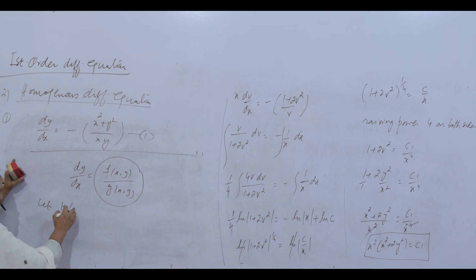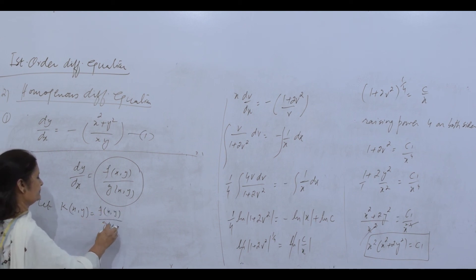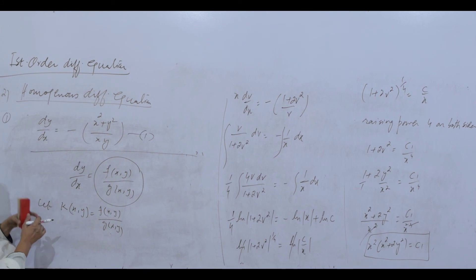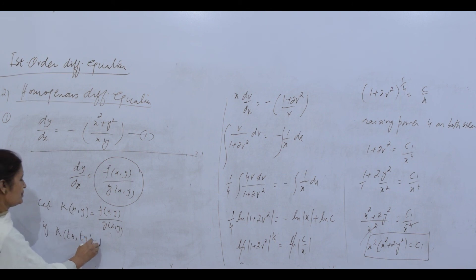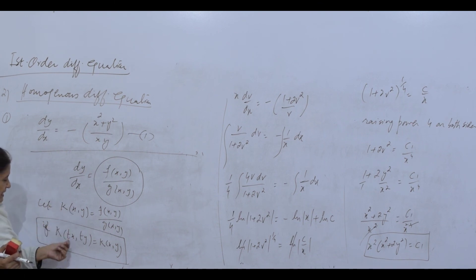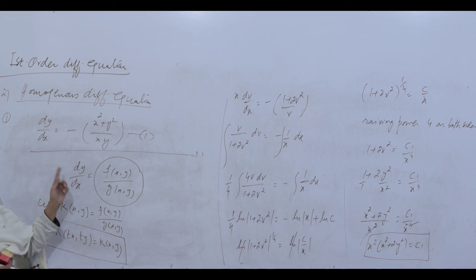If k(tx, ty) = k(x,y) — that is, replacing x by tx and y by ty everywhere and simplifying gives you the original function back — then the differential equation is homogeneous. If homogeneous, put y = vx and proceed.